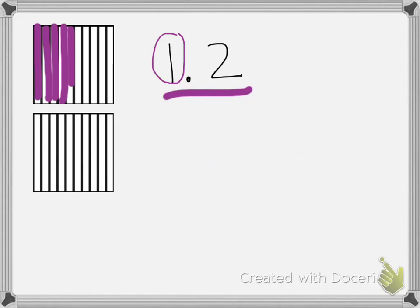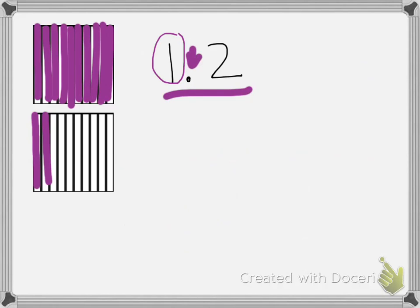So the whole thing, all 10. So 10 out of 10 is the whole thing. So we have 1 whole and, our decimal point tells us to say and, 2 tenths. So 1 whole and 2 tenths of another whole.